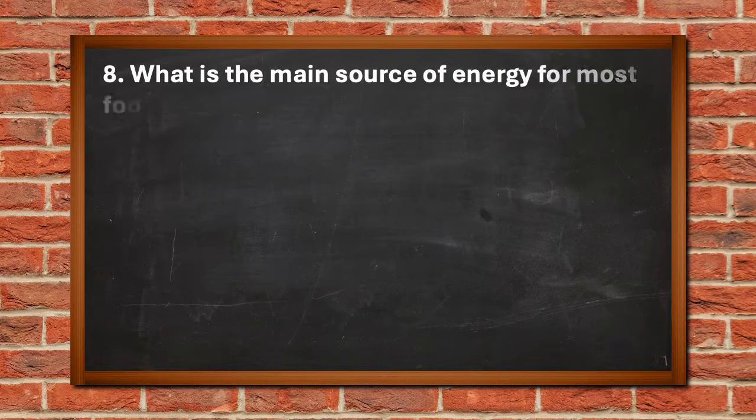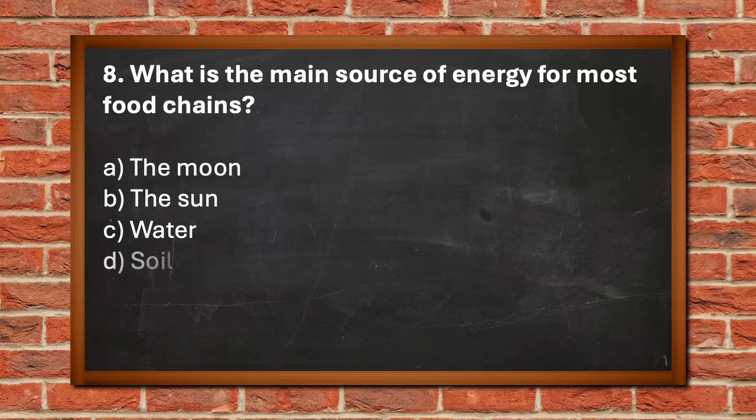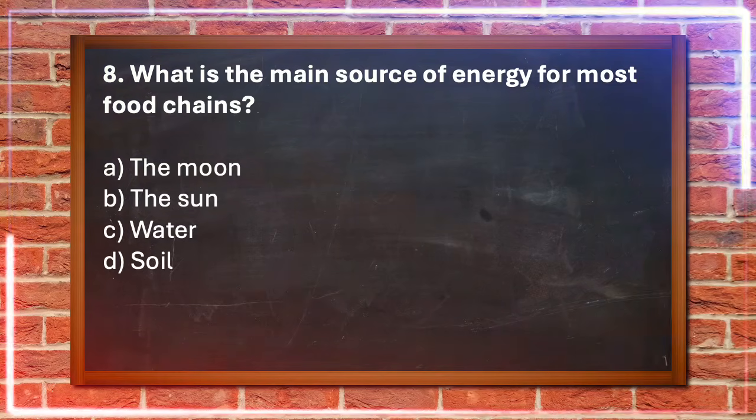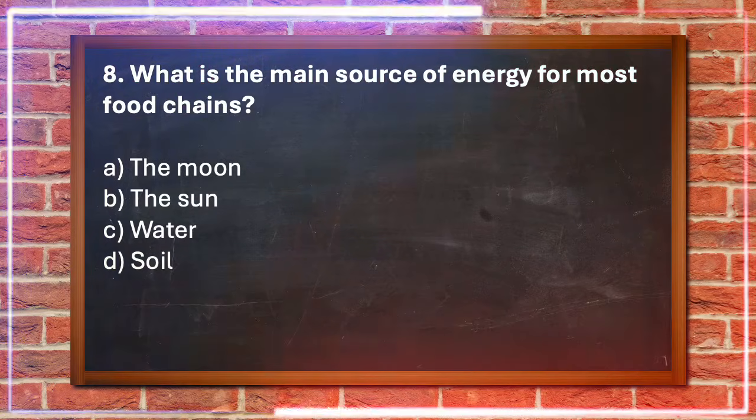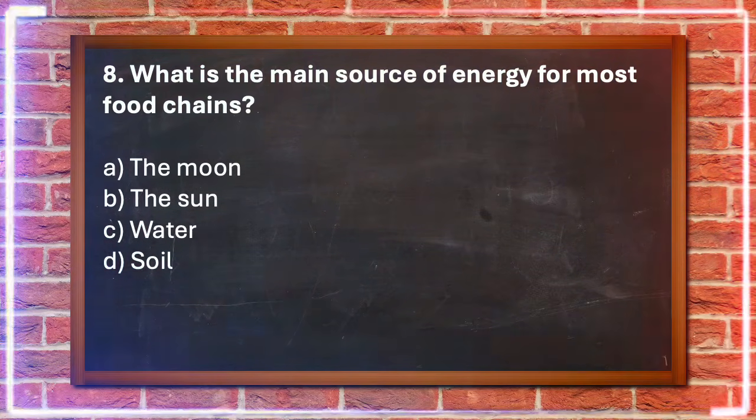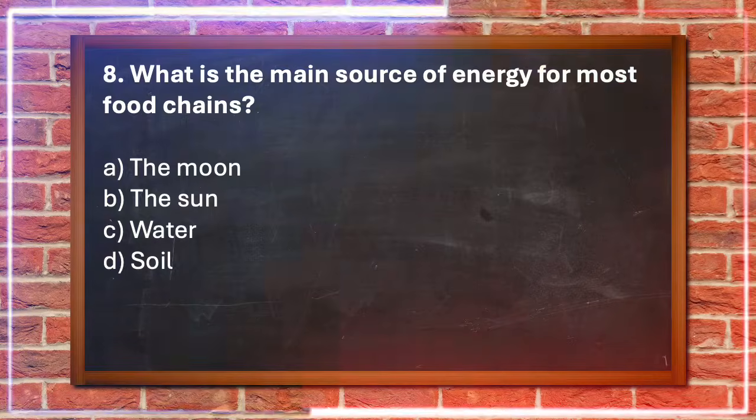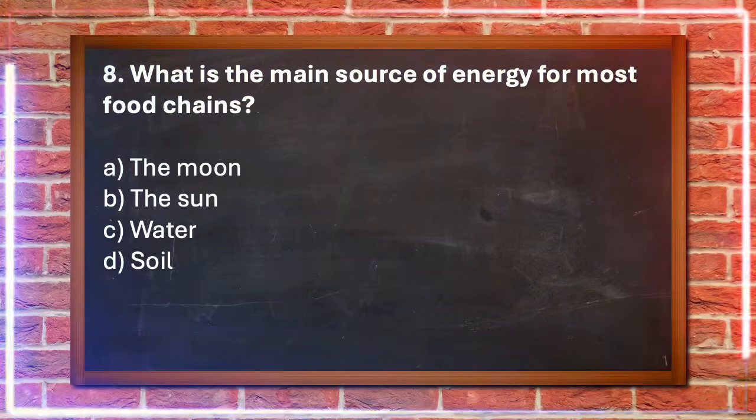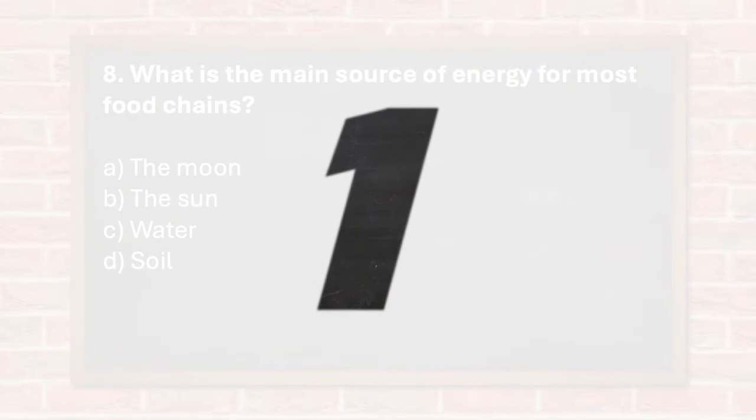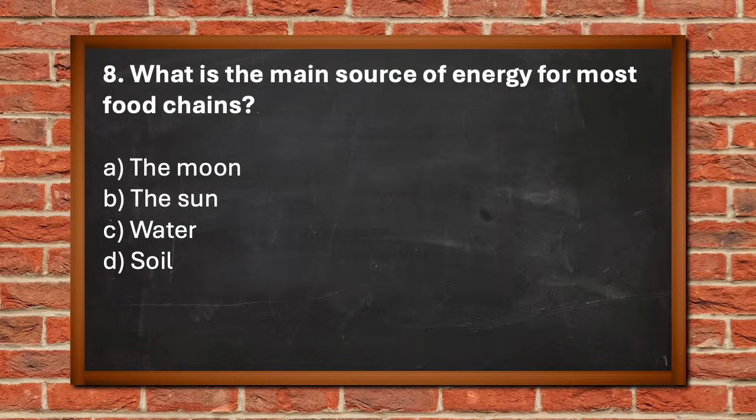Number 8. What is the main source of energy for most food chains? A. The moon, B. The sun, C. Water, D. Soil. The answer is B. The sun.